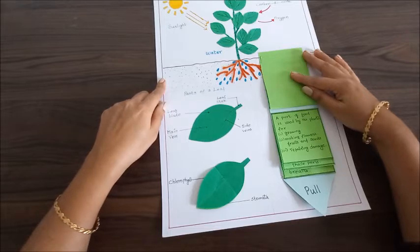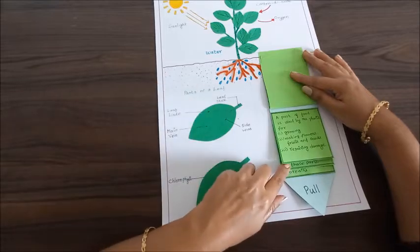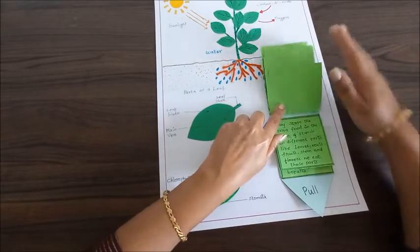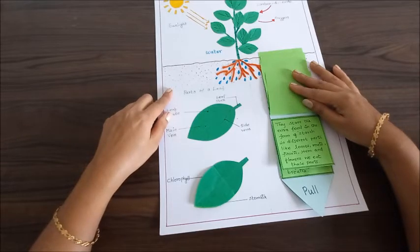In case there is any damage to the plant, it helps in repairing the damage as well. They store the extra food in the form of starch in different parts like leaves, roots, fruits, stem, and flowers, and we eat those plants.